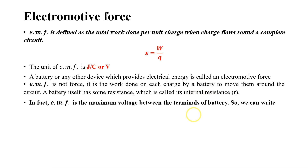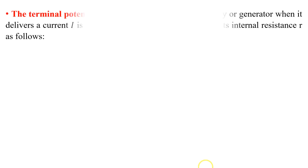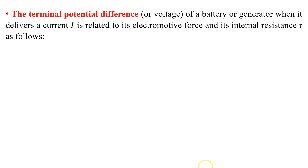A battery itself has some resistance, which is called its internal resistance. In fact, EMF is the maximum voltage between the terminals of the battery. The maximum voltage equals the total work done in moving the charge around a complete circuit, so you can also call the maximum voltage the electromotive force. Keep in mind that electromotive force is always greater than the voltage.